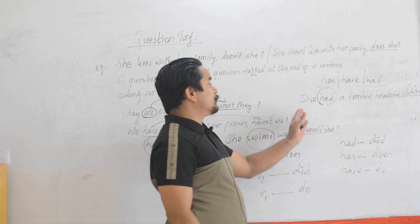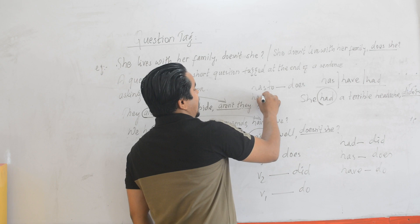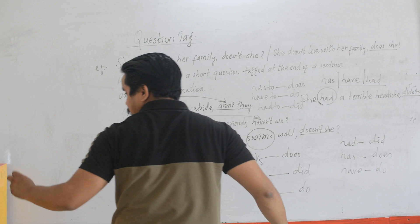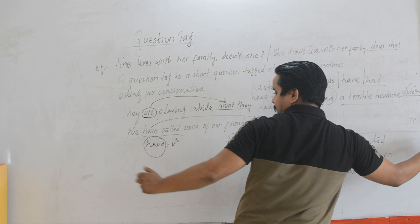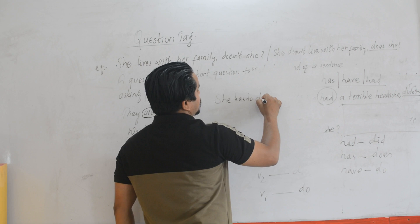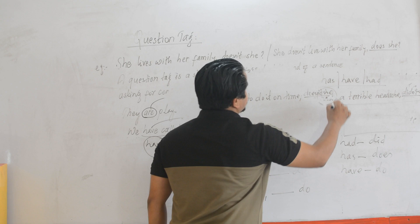The same sort of rule we follow for 'have to', 'has to', and 'had to'. Like, if there is 'has to', we go with 'doesn't'. Likewise, if there is 'have to', we go with 'don't'. And if there is 'had to', we go with 'didn't'. For example: 'She has to do it one time.' As 'has to' is followed by V1, you need to apply the rule in this way.